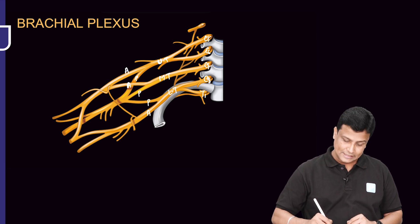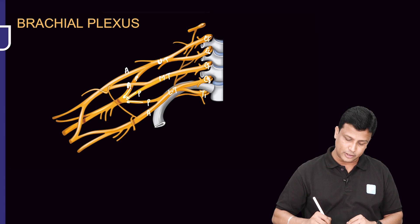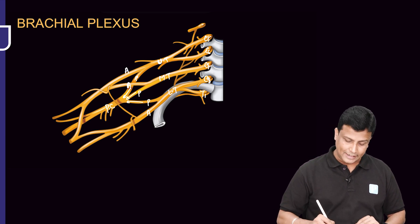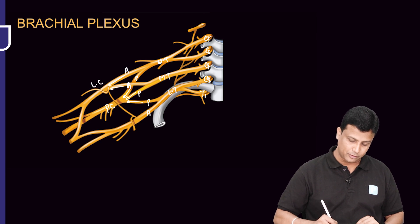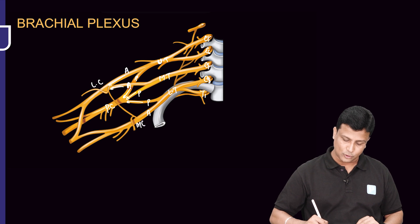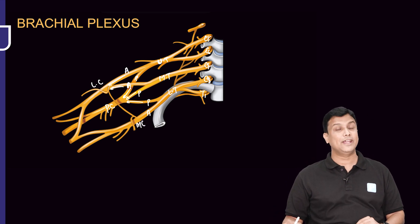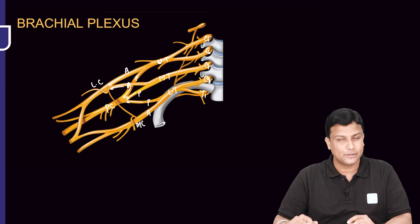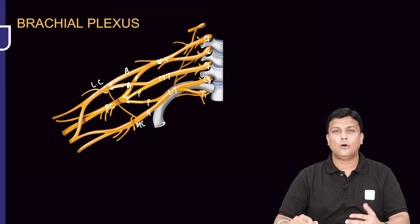After division, they combine to form cords. The posterior divisions of the upper, middle, and lower trunks combine to form the posterior cord. The anterior divisions of the upper and middle trunks combine to form the lateral cord, and the anterior division of the lower trunk continues as the medial cord. So we have three cords: posterior, lateral, and medial.